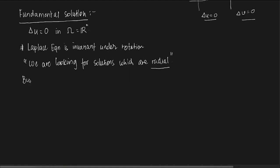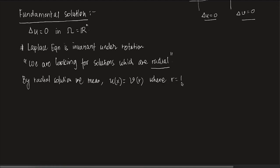By radial solution, we mean U of X must look like some V of R, where R equals mod X. So basically, U of X should look like a function of |X| only.